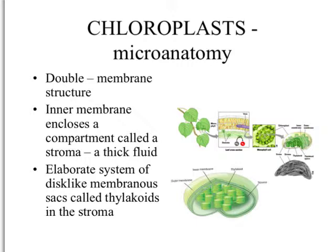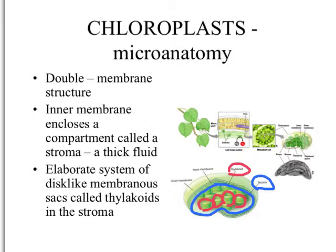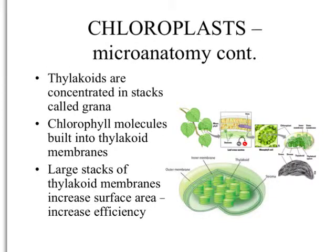Photosynthesis takes place within the chloroplast. The chloroplast is a double membrane structure. The inner membrane encloses a compartment called the stroma, which is a thick fluid. Within that fluid we have the thylakoid — disc-like structures — and there are tons of these within the stroma. These thylakoids are stacked up in what are called grana. So one disc is called a thylakoid, and the whole stack is called grana, which are inside the stroma enclosed by that inner membrane.